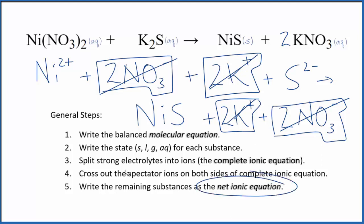What's left is the net ionic equation for Ni(NO3)2 plus K2S. I'll clean it up and write the states. We'll have our net ionic equation.